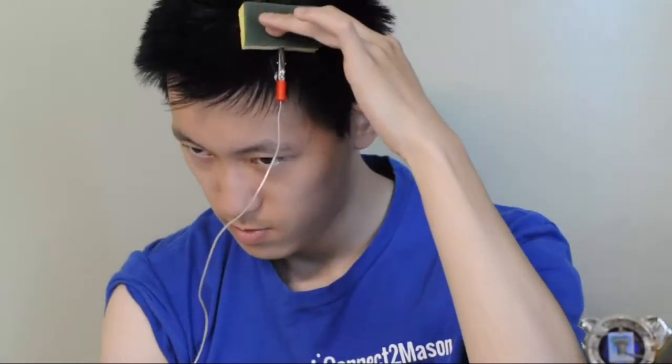The next sponge goes to the dorsolateral prefrontal cortex, which is located on the left side of the head where he puts it. This is the positive sponge.